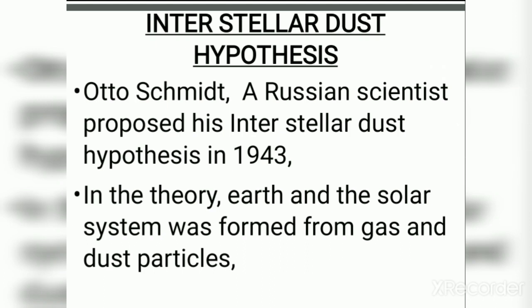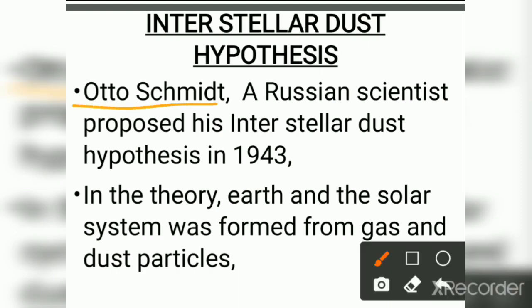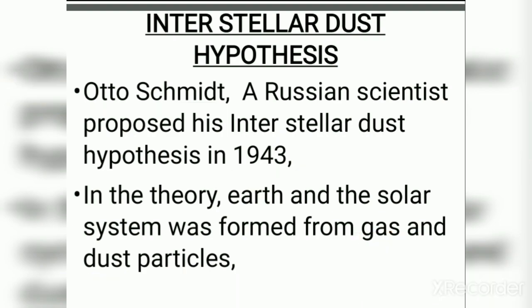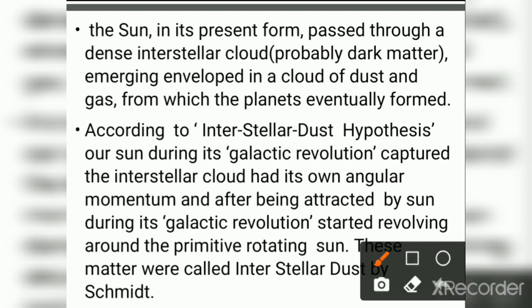The Interstellar Dust Hypothesis was proposed by Otto Schmidt, a Russian scientist, in 1943. In this theory, the Earth and the solar system were formed from gas and dust particles. The Sun in its present form passed through a dense interstellar cloud. According to the hypothesis, during its galactic revolution, the Sun captured the interstellar cloud, which had its own angular momentum and after being attracted by the Sun started revolving around it. This matter was called stellar dust by Schmidt.